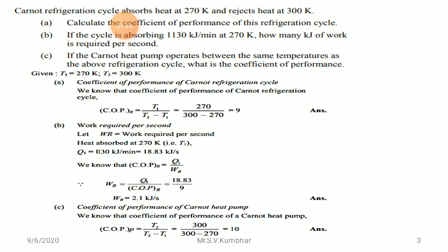If the question asked for kilojoules of work required per minute, simply multiply 2.1 by 60 to get the answer in kJ per minute.